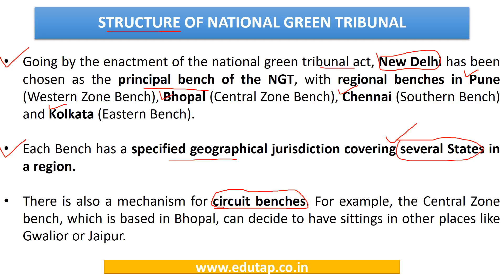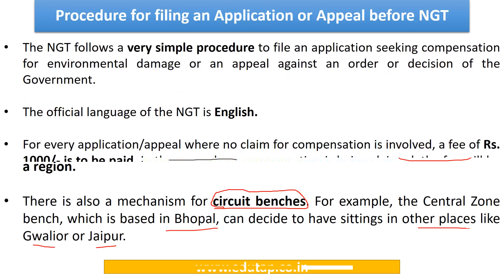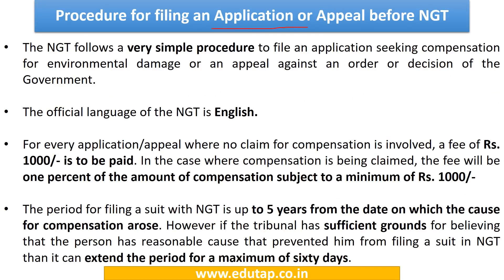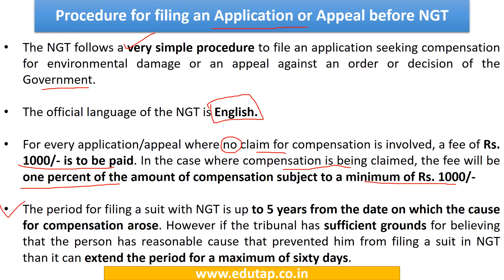A mechanism of circuit benches also exists. For example, the bench situated in Bhopal can decide to have sittings in other places like Jaipur and Gwalior. How to file an application or appeal before NGT? NGT follows a very simple procedure for filing an appeal against the decision of the government. The official language of NGT is English. Rs. 1,000 is to be paid for filing an appeal before NGT where no compensation is to be paid, and where compensation is to be claimed, the fee will be 1% of the total amount of compensation, subject to a minimum of Rs. 1,000. A suit can be filed before NGT within a period of 5 years from the date on which the cause for compensation arose. It can be extended for a maximum of 60 days if the tribunal has sufficient grounds that the person had a reasonable cause for not filing the suit earlier.